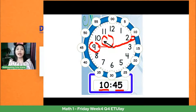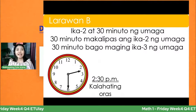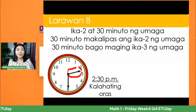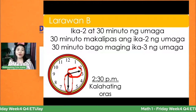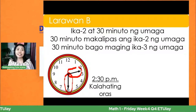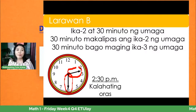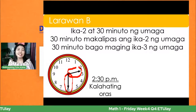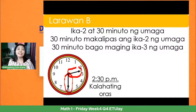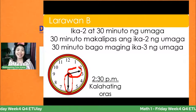Kung sa Tagalog naman, medyo mahaba. Ganito ang wastong pagbasa. Kagaya nito, pag binasa natin ito — maikling kamay ay nasa 2, ang mahabang kamay ay nasa 6, which is 30 minutes. Ang basa natin dyan ay 2:30. Kung ito ay sa Tagalog, ang sasabihin natin ay ikadalawa at 30 minuto ng umaga, o kaya naman ay 30 minuto makalipas ang ikalawa ng umaga, or 30 minuto bago maging ikatatlo ng umaga.